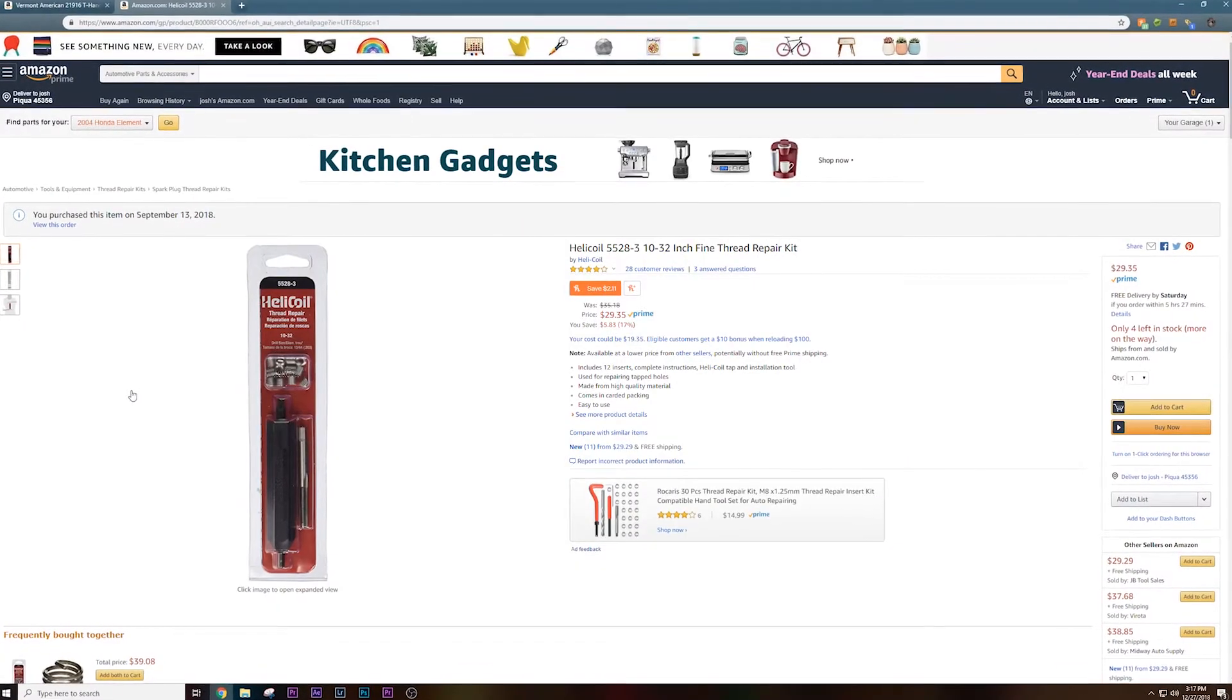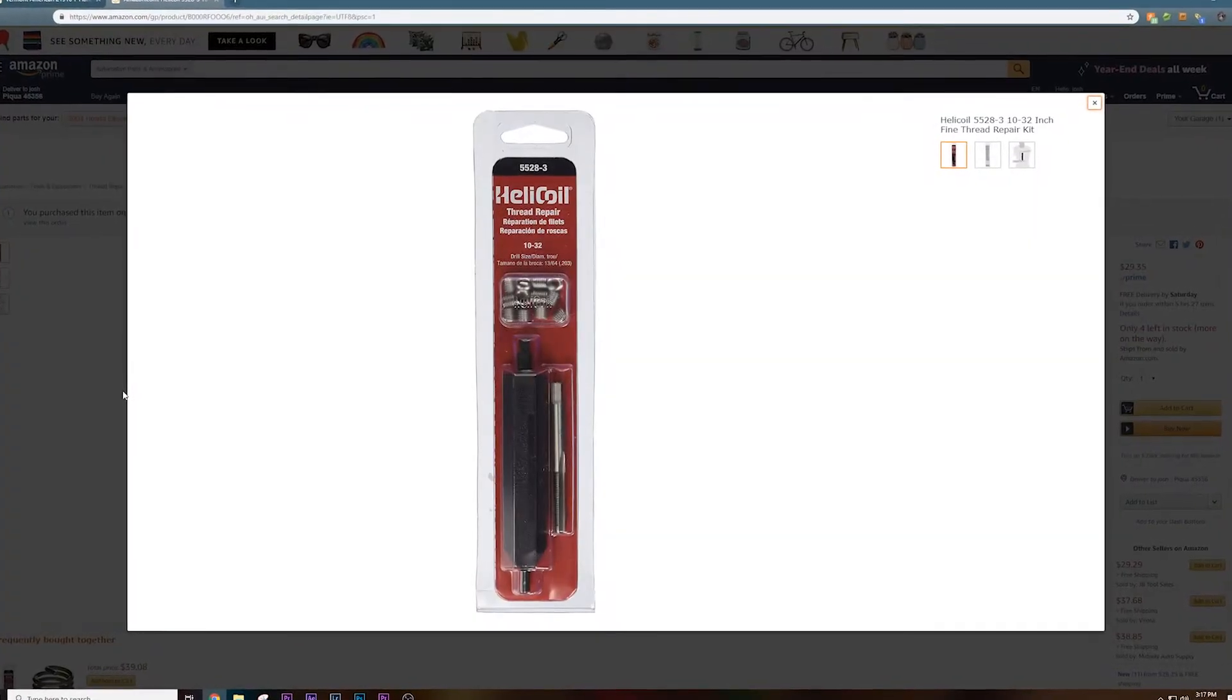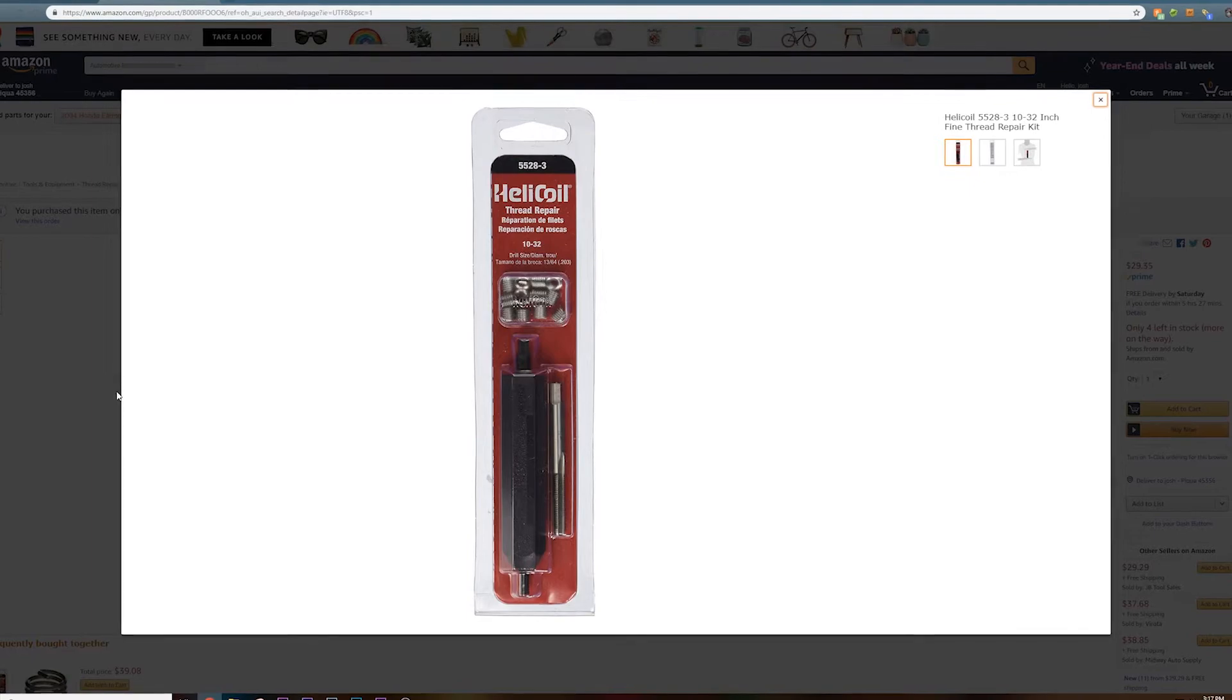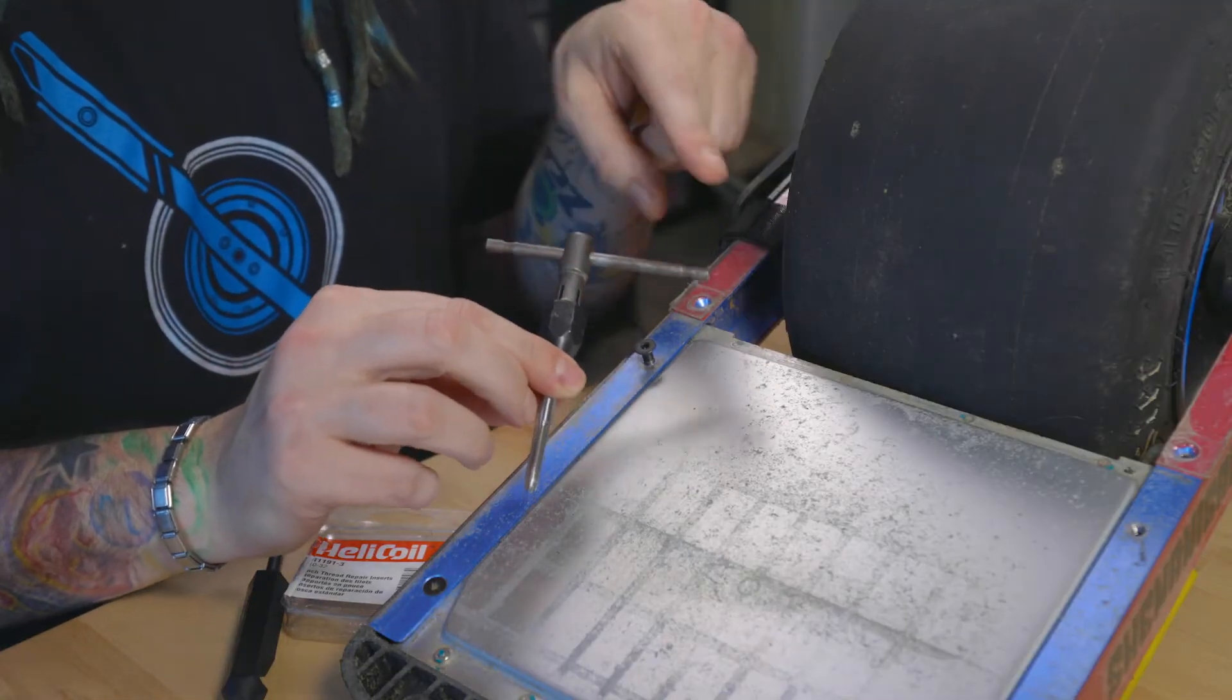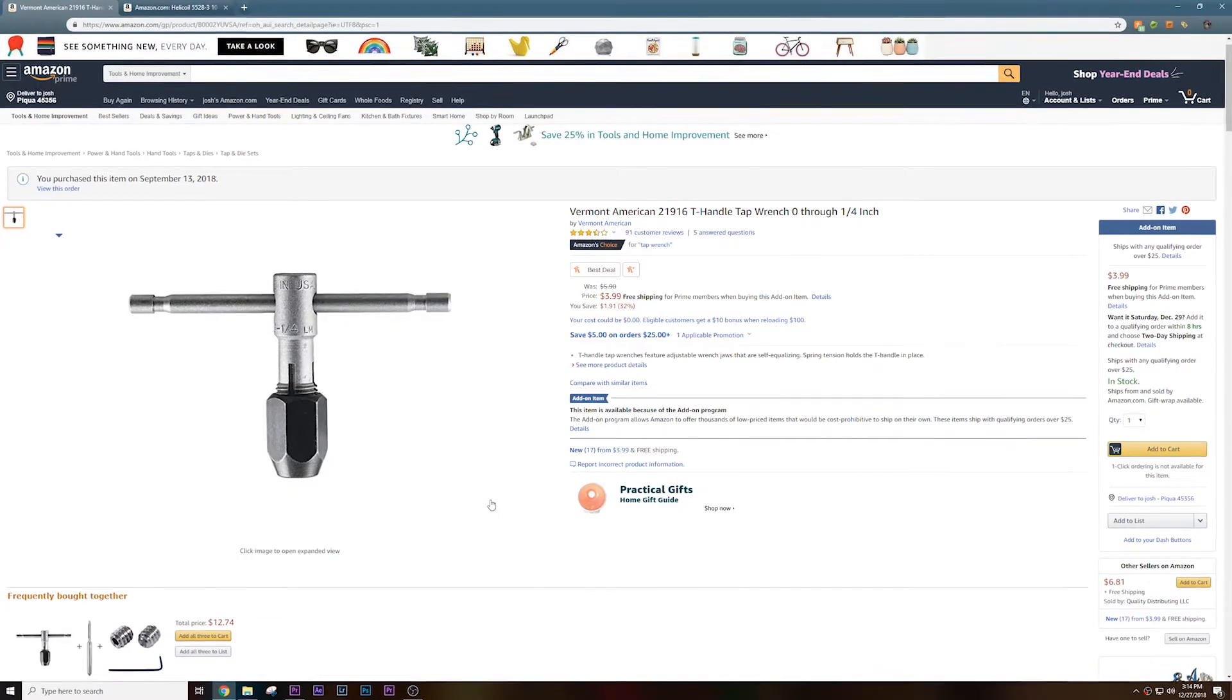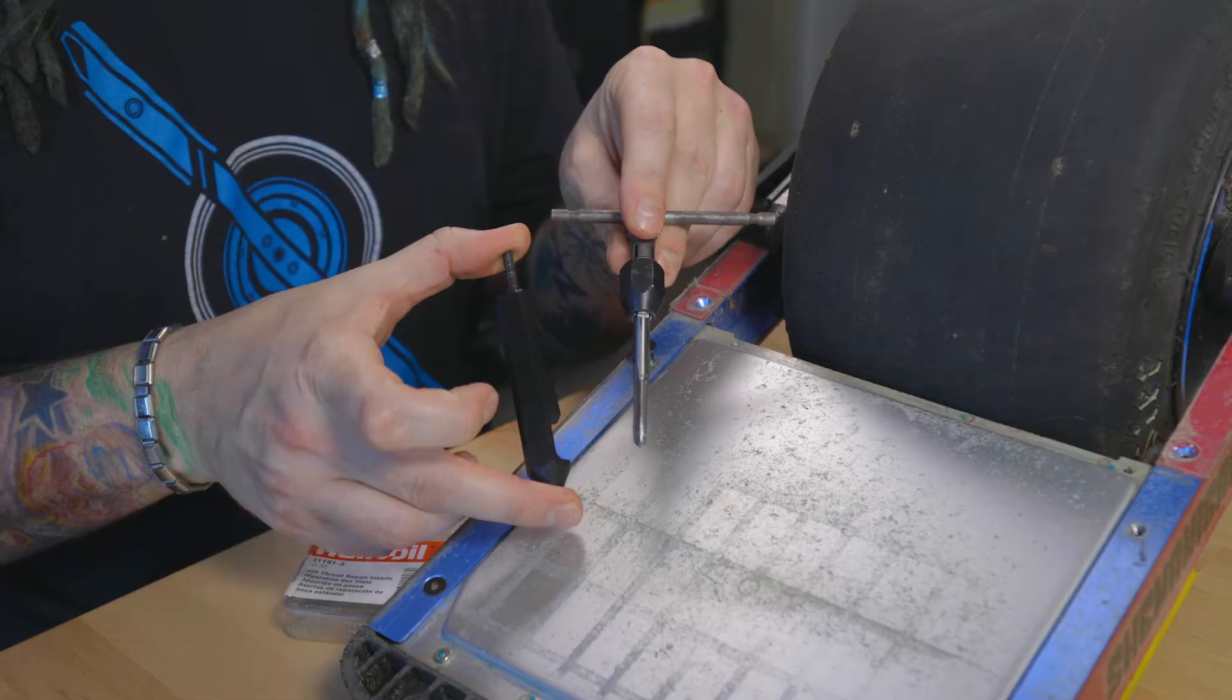You only need to pick up a couple things. I will leave a link for you guys down below. You need to pick up this helicoil repair kit which comes with 12 of these threaded inserts and this insert tool. It also comes with this tap. The only separate thing you need to pick up is this t-handle here which holds your tap and also holds the insert tool.